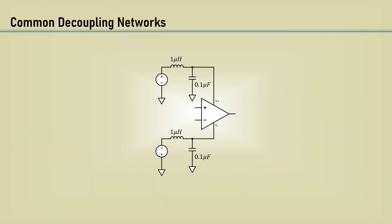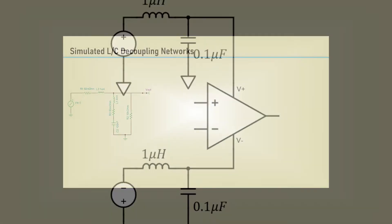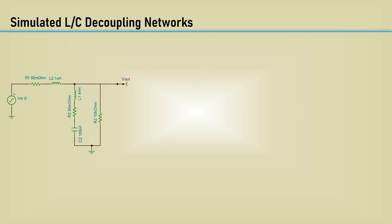Here's a common vanilla decoupling network comprised of a series inductor and shunt capacitor — a.k.a. a two-pole low-pass filter. It should work great. I've simulated the parasitic elements of the inductor with some series resistance. It will have some parasitic capacitance too, but it's usually negligible. I also modeled the typical effective series resistance and effective series inductance of the shunt capacitor.